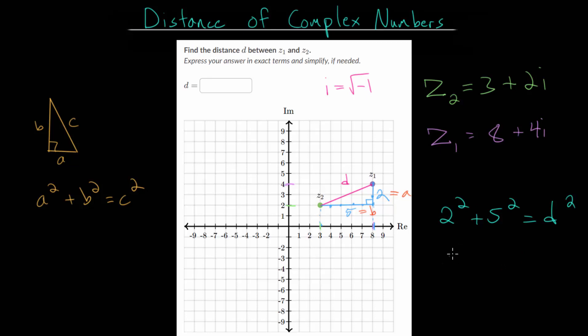At this point, we just need to simplify this equation and solve it for D. So 2 squared, 2 times 2 is 4. 5 squared, or 5 times 5 is 25. And D squared we can just rewrite.